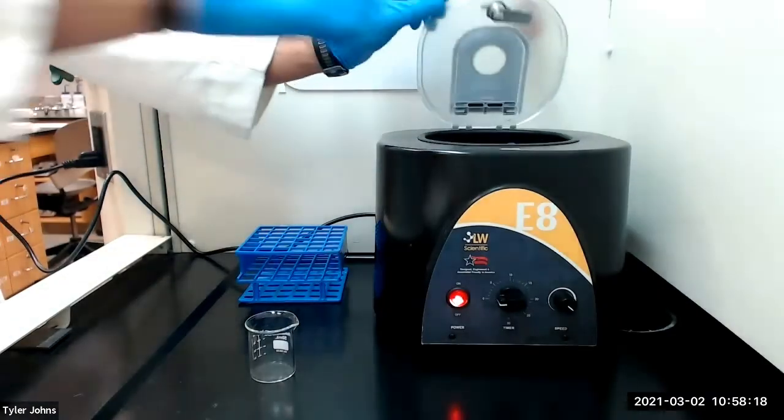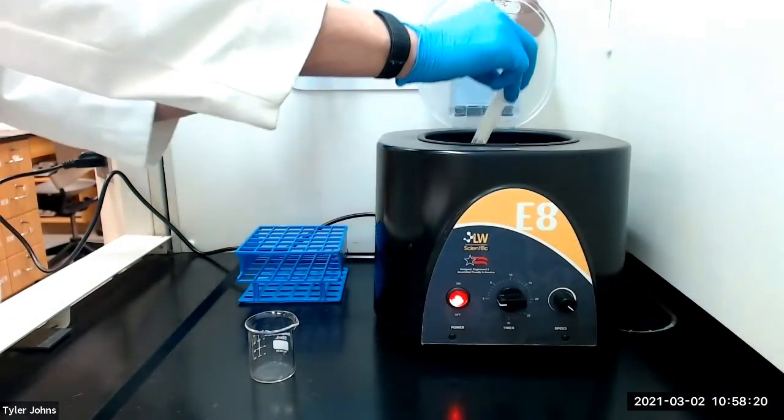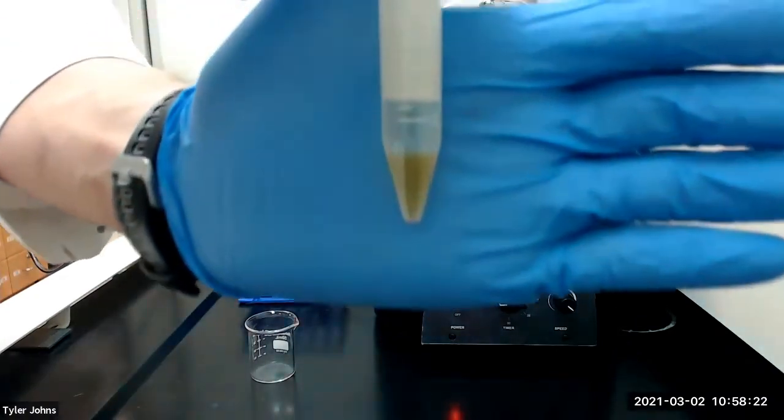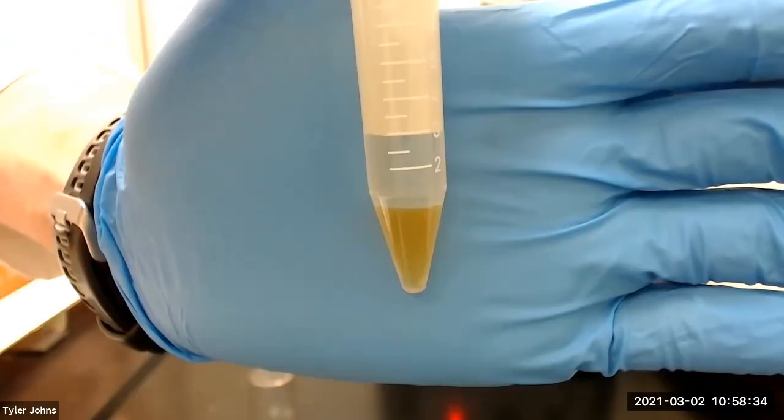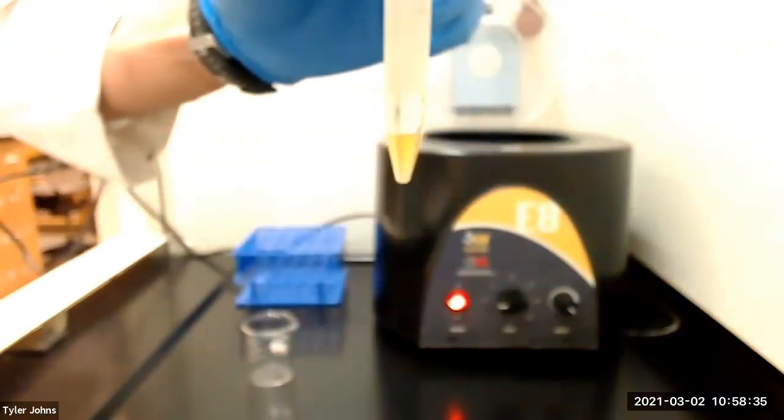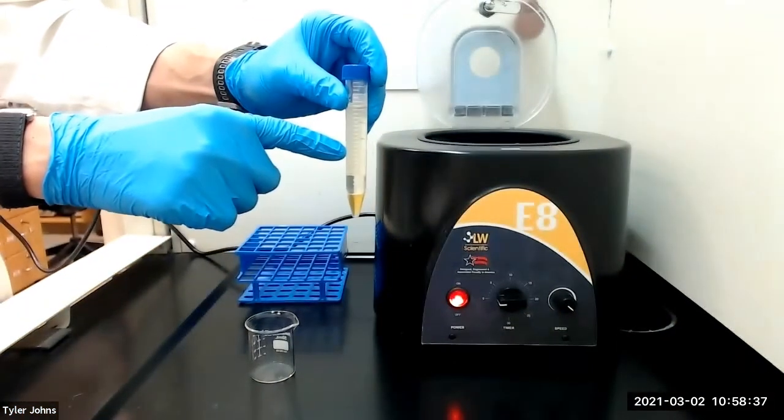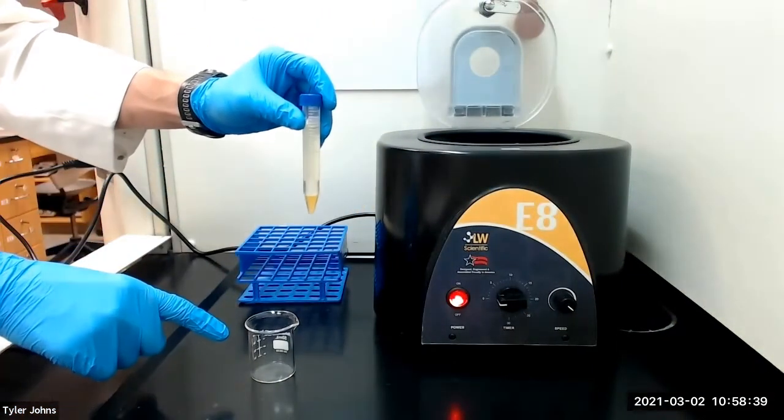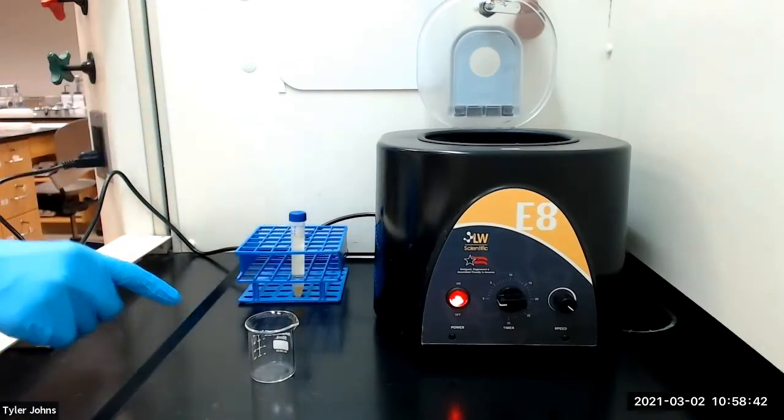This is what our mixture looks like after centrifugation. We will next transfer the top biodiesel layer to the pre-weigh 50 milliliter beaker using a pasture pipette.